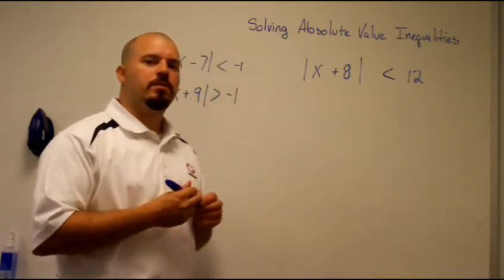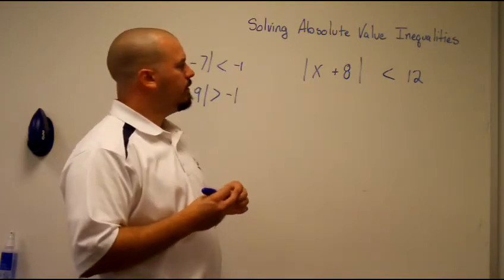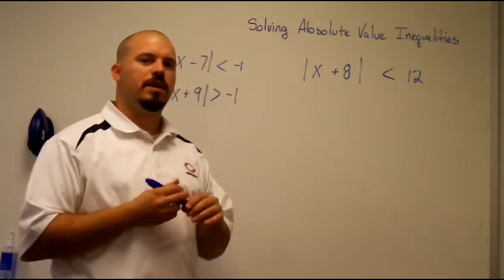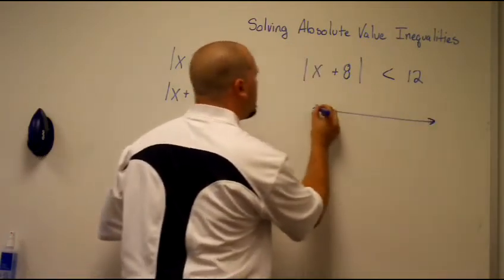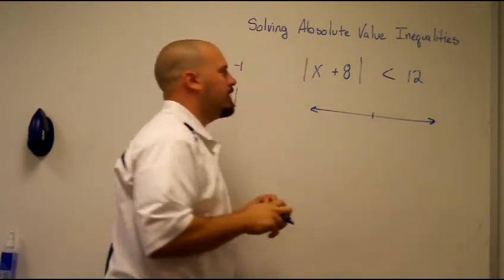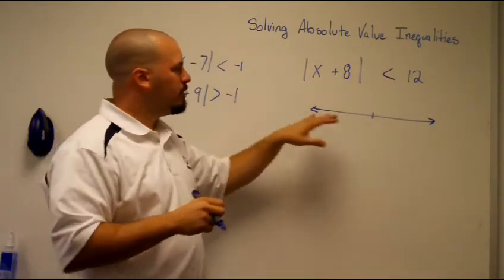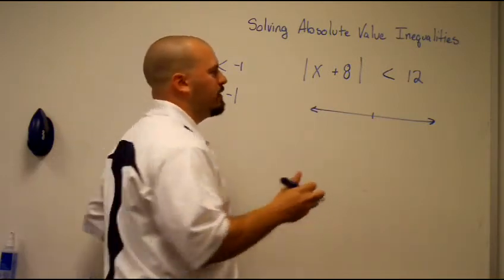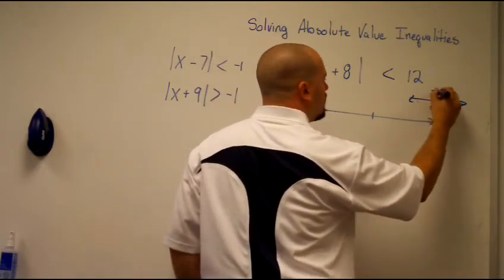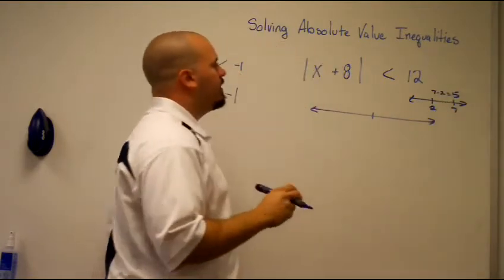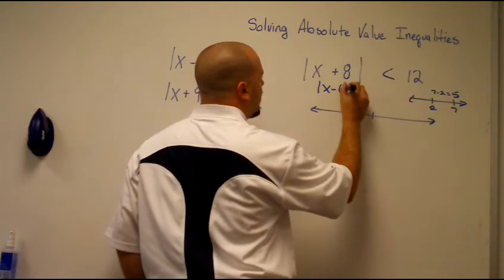We're going to run through a couple more examples of absolute value inequalities. The first one was a greater-than-or-equal-to problem; this one is a less than. But the main difference I want to look at is actually the plus sign here. Remember, we're using the idea of distance, and distance on a number line is always represented with a subtraction. So we have to take this addition and rewrite it as a subtraction — that's x minus negative 8. The absolute value of that is less than 12.